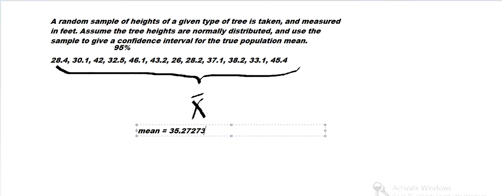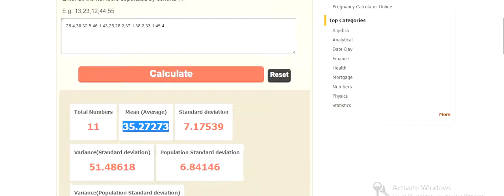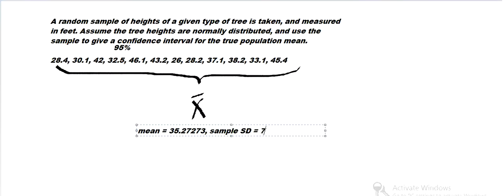And then we want the sample standard deviation. That's going to tell us how much that varies. That's 7.175. So we'll need a calculator to do this, unless you're asked to compute by hand, which is a little bit longer, but we can.